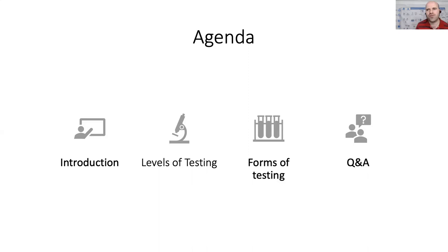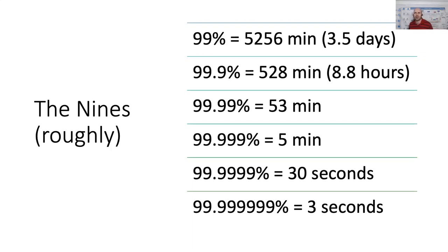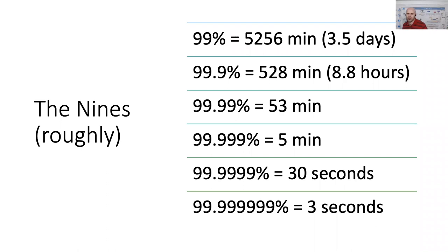Another perspective is availability — being able to present your service in the best way. This ties into the theory of the nines. When we speak about 99.9% availability, we're almost 3.5 days offline in a year. At 99.99%, that's about eight hours down. At 99.999%, we're down to about 53 minutes. Now think about streaming services — Netflix, Amazon, Apple — which level of availability would you want?